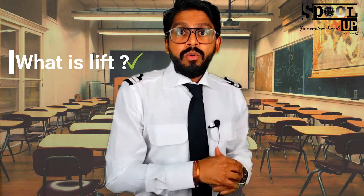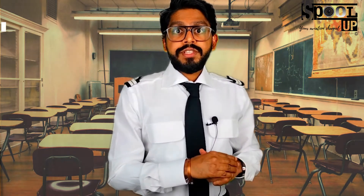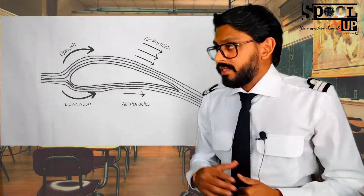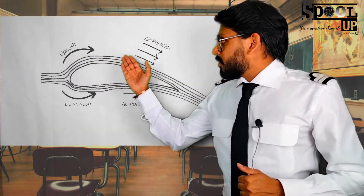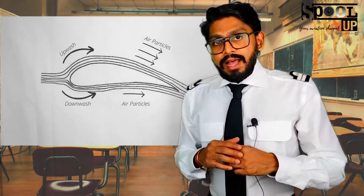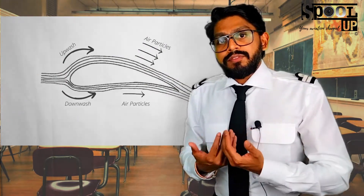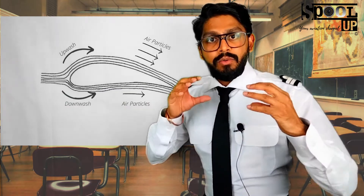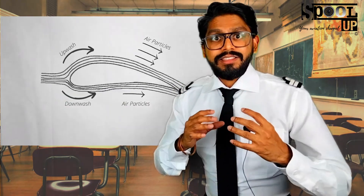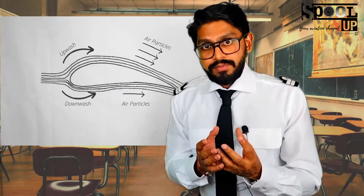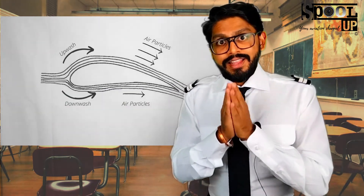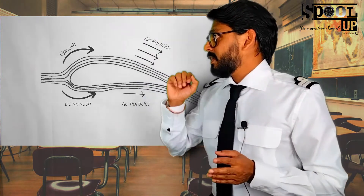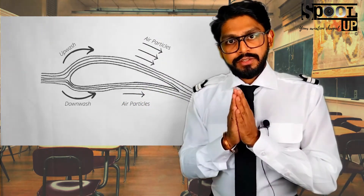And now, how is lift produced? Let's consider this cross-section of a wing. As the aircraft flies through the air, the air around the wing is displaced, and we can notice that there are two regions: an upper region and a lower region.